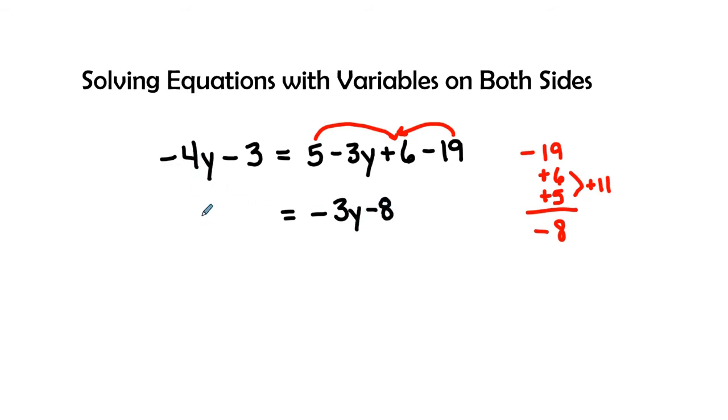And let's go ahead and bring the left side down as well, the negative 4y minus 3. So I need to get my letters on the left, my numbers on the right, so I'm going to use the inverse and add 3y to both sides.